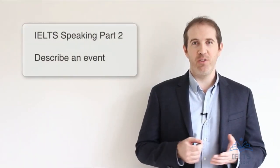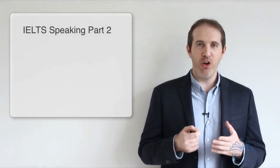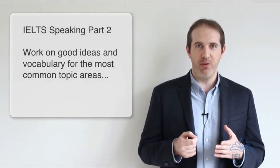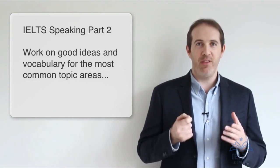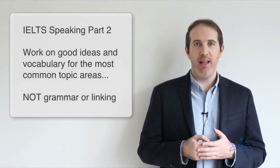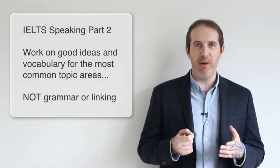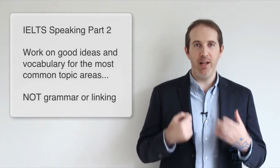In this lesson, we'll continue with IELTS Speaking Part 2 and we're going to prepare the main topic area: describe an event. What we're trying to do in this preparation for IELTS Speaking Part 2 is work on good ideas and good vocabulary for the most common topic areas, the most common tasks for this part of the test. We're not working on grammar or linking — that will not help you in Speaking Part 2. It's all about good ideas and good vocabulary so that you respond to the task well and give a really good description. That's what will impress the examiner.